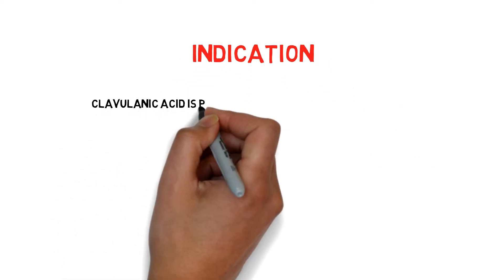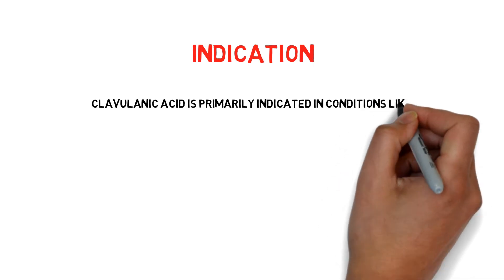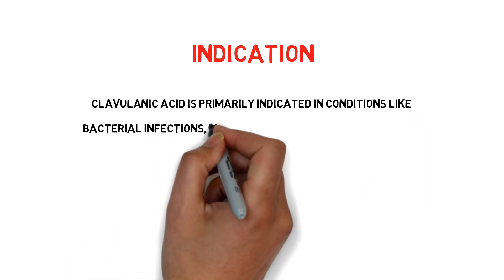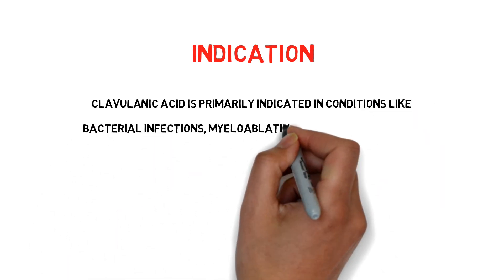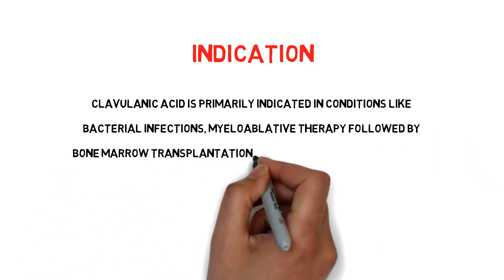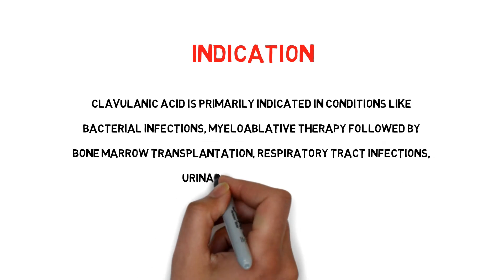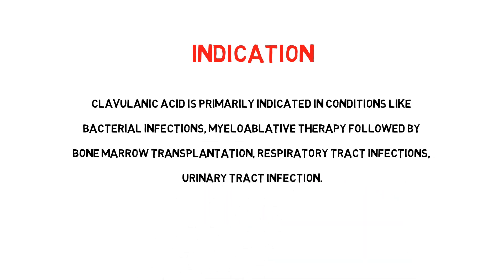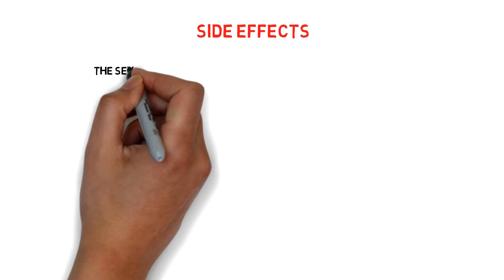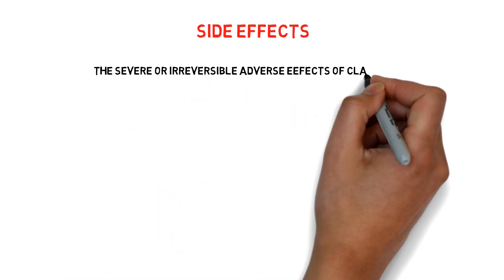Its indications are: clavulanic acid is primarily indicated in conditions like bacterial infection, myeloablative therapy followed by bone marrow transplantation, respiratory tract infection, and urinary tract infection.